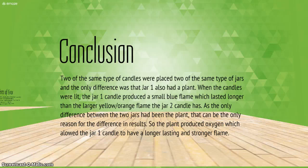Conclusion. Two of the same types of candles were placed in two of the same type of jars. And, the only difference was that jar one also had a plant. When the candles were lit, jar one candle produced a small flame, which lasted longer than the larger yellow-orange flame that jar two candle had. As the only difference between the two jars had been the plant, that can only be the reason for the difference in results. So, the plant produced oxygen, which allowed jar one candle to have a longer-lasting and stronger flame.